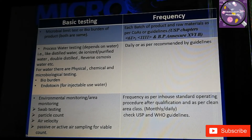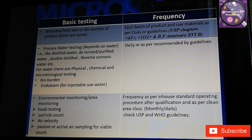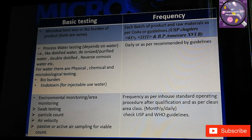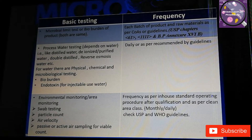Another test is environmental monitoring or area monitoring. This kind of monitoring is very important for clean rooms and controlled environments. It includes swab testing, particle count, air velocity, passive or active air sampling for viable count, and also personal hygiene testing such as glove testing and gown testing.